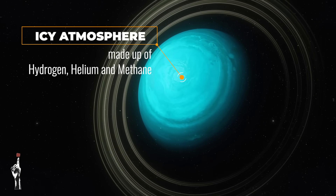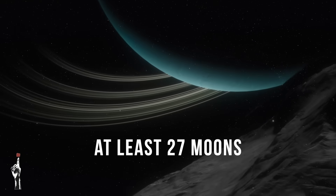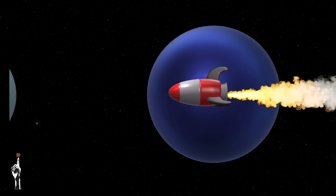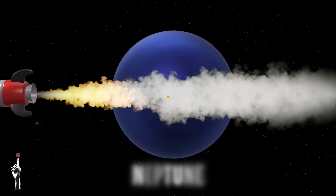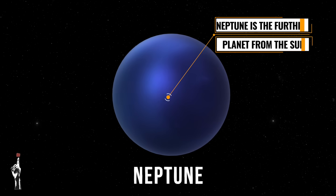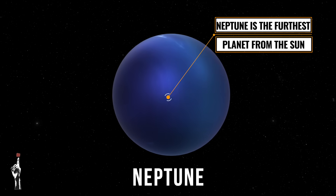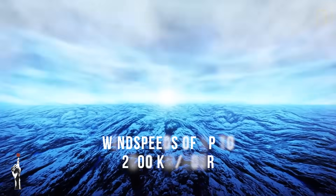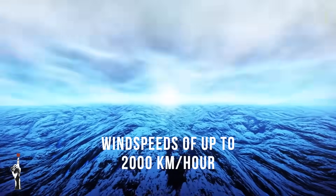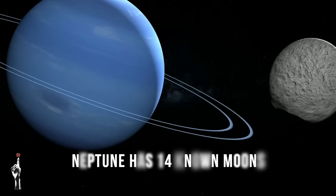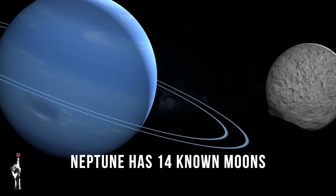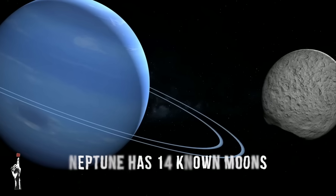Uranus has faint rings and at least 27 moons. Finally, our journey ends at Neptune, the farthest planet from the Sun — a cold and mysterious gas giant known for its deep blue color caused by methane in its atmosphere. Despite being so far from the Sun, Neptune has the fastest winds in the solar system, with speeds reaching over 2,000 kilometers per hour. It also has a faint ring system and 14 known moons.